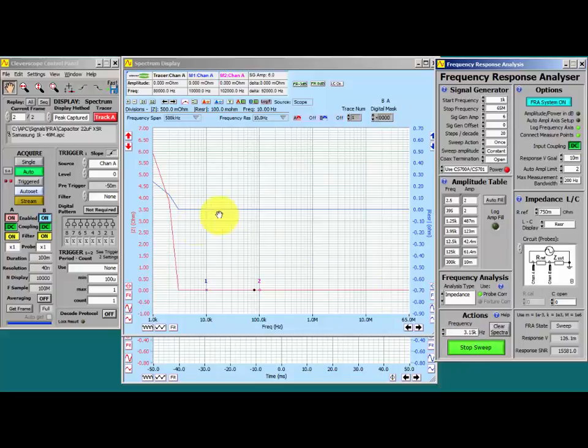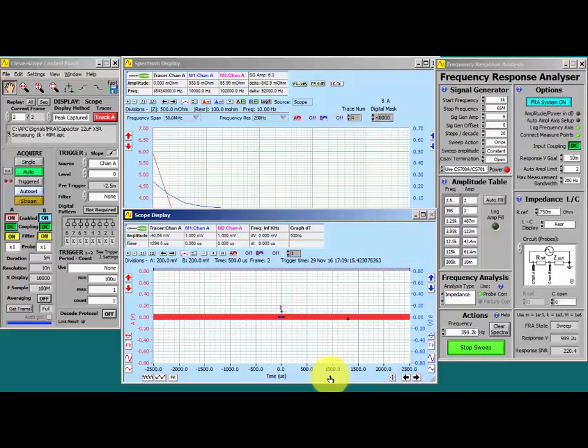Right, notice that we are plotting impedance in ohms and effective series of resistance on channel B. We can verify by looking at the scope display that the signal is not too large and is not being clipped.